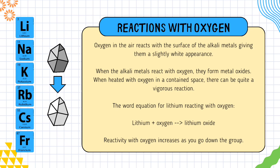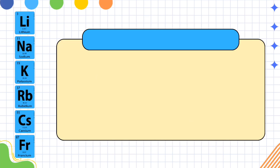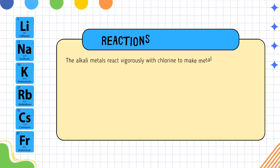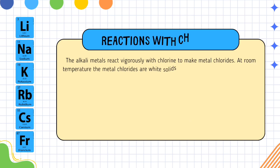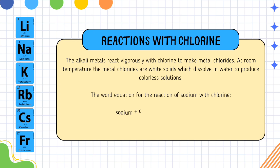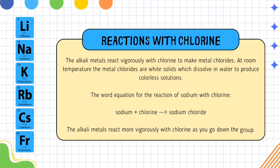Reactivity with oxygen increases as you go down the group. Now we will learn what happens when alkali metals react with chlorine. Alkali metals react vigorously with chlorine to make metal chlorides. At room temperature, the metal chlorides are white solids which dissolve in water to produce colorless solutions. The word equation for the reaction of sodium with chlorine is: sodium plus chlorine → sodium chloride. The alkali metals react more vigorously with chlorine as you go down the group.